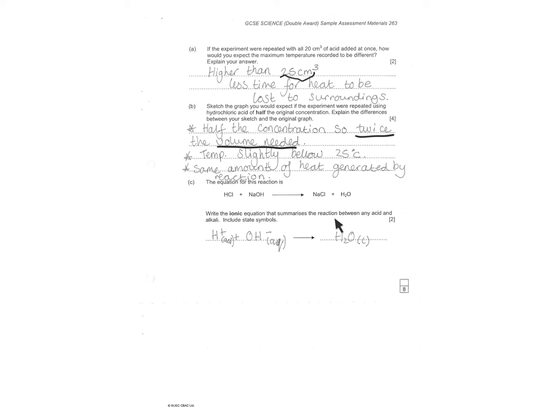Give the ionic equation that summarizes the reaction between acid and alkali. That's H plus ions coming from the acid. OH minus coming from the alkali will form water. Remember your state symbols, annual charges.